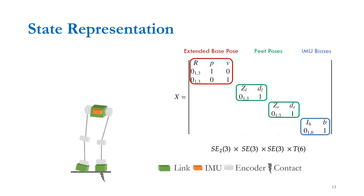Coming back to Diligent KIO, the state representation comprises a direct product of different submanifolds. The base rotation R, position P, and linear velocity V are encapsulated within the extended base pose Lie group, while foot rotations and positions are described by SE(3) poses. The suffixes L and R correspond to the left and right foot respectively. The IMU biases for the accelerometer and gyroscope are included in the state as part of a translation group of dimension 6. Together these elements form the composite manifold representing the state.